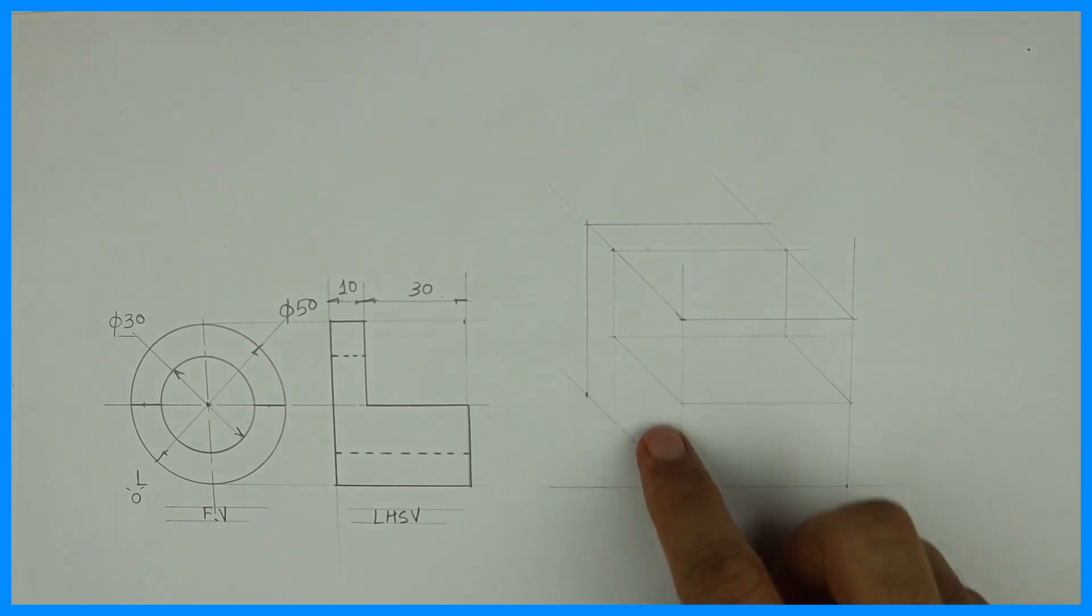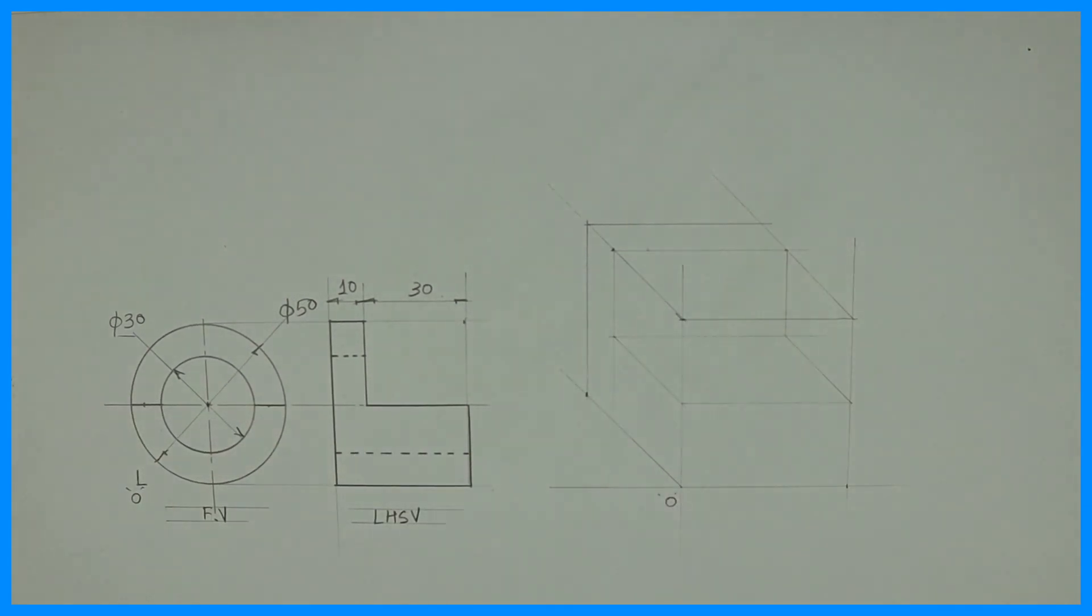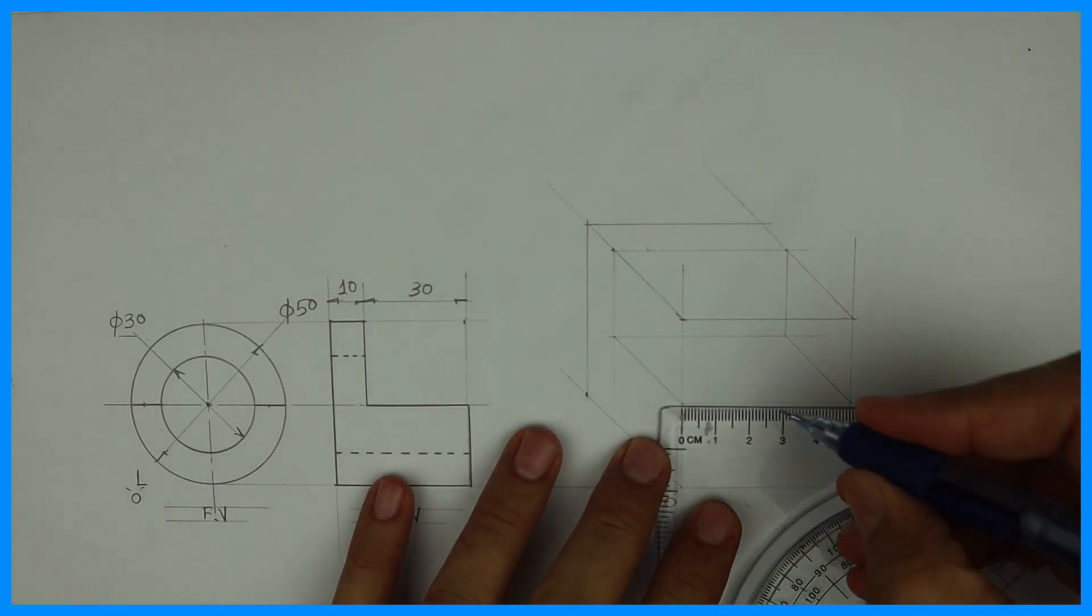After that from center, see this, this semi-circle will come here. Half semi-circle will go behind. After that you take center.